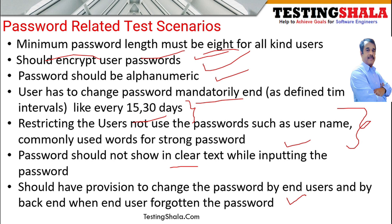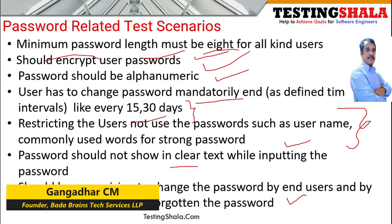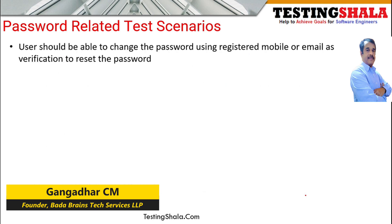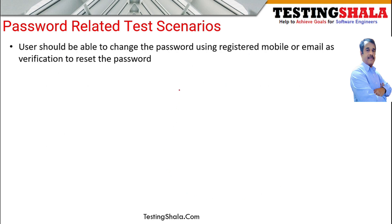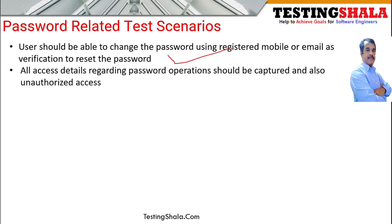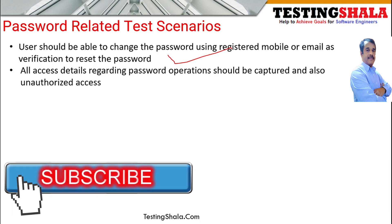The next scenario covers the forgot password functionality. There are situations where a user hasn't accessed the application for 10 or 15 days and may have forgotten their password. Every application should have a mechanism to handle this — either by sending the password via email or sending an OTP via mobile. Once the user validates with the OTP or email link, we should allow them to change their password.